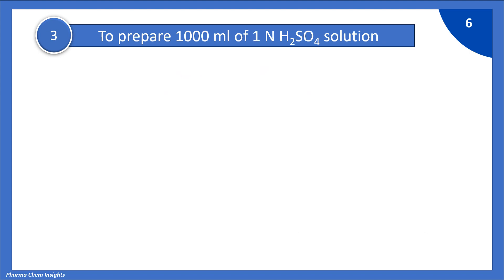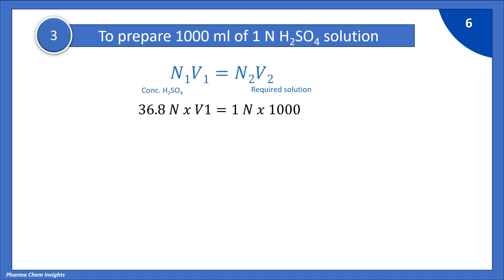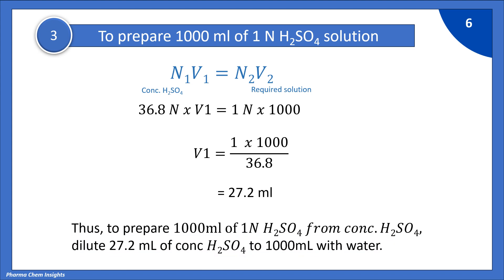Next example: to prepare 1000 ml of 1 normal H₂SO₄ solution. Again using the normality equation N1V1 = N2V2: 36.8 × V1 = 1 × 1000. Putting the values, V1 = (1 × 1000) ÷ 36.8 = 27.2 ml. To prepare 1000 ml of 1 normal H₂SO₄, dilute 27.2 ml of concentrated H₂SO₄ to 1000 ml with water, which gives 1 normal H₂SO₄ solution.